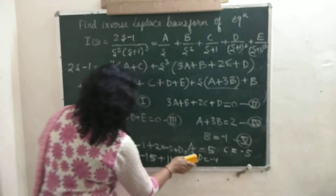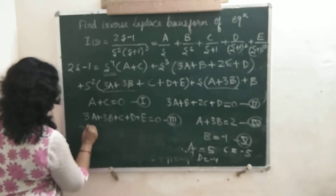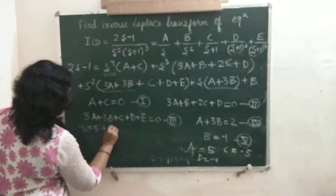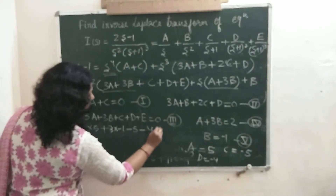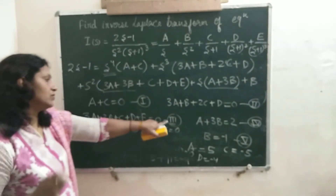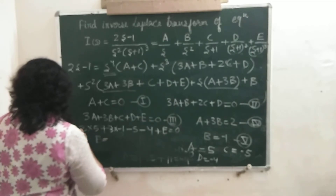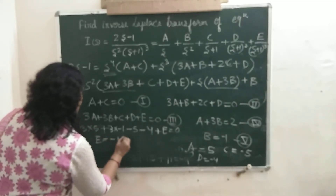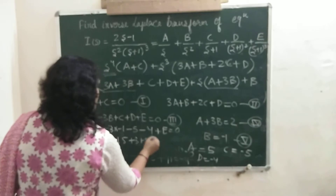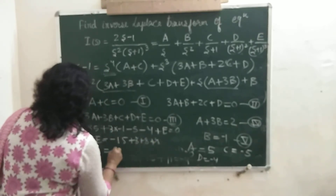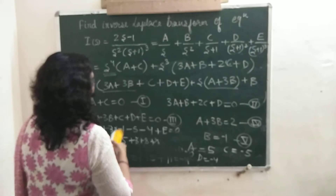So C equals minus 5 and D equals minus 4. To get E, substitute all values into the third equation: A equals 5, B equals minus 1, C equals minus 5, D equals minus 4, plus E equals 0. Solving: minus 15 plus 3 plus 5 plus 4 plus E equals 0, giving E equals minus 3.